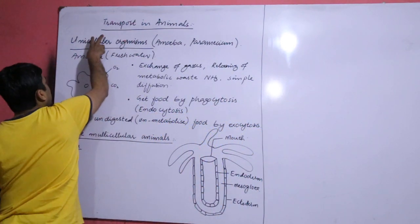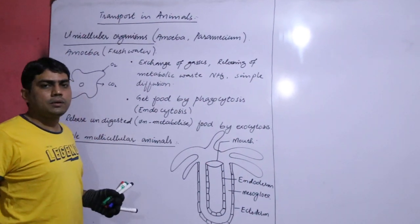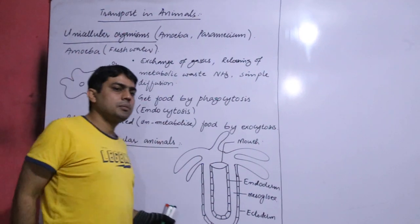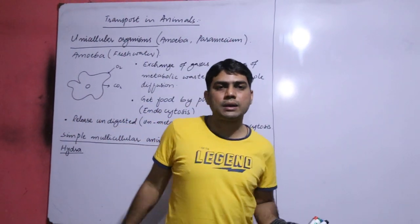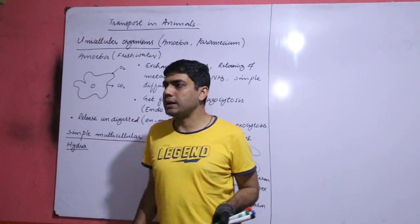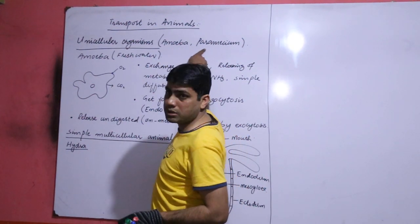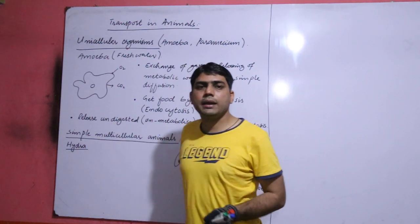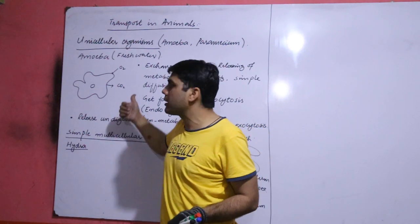First we are going to discuss unicellular organisms. The unicellular organisms belong to kingdom Protista, so we can call it animal-like protista like amoeba and paramecium. They are animal-like, they are not animals because animals are multicellular but they are unicellular.